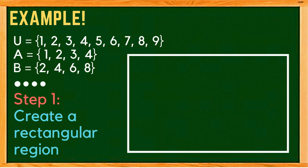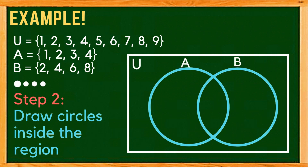Using the given sets, let us illustrate them using the Venn Diagram. The first thing that we need to do is to create a rectangle. The second step is to create circles.